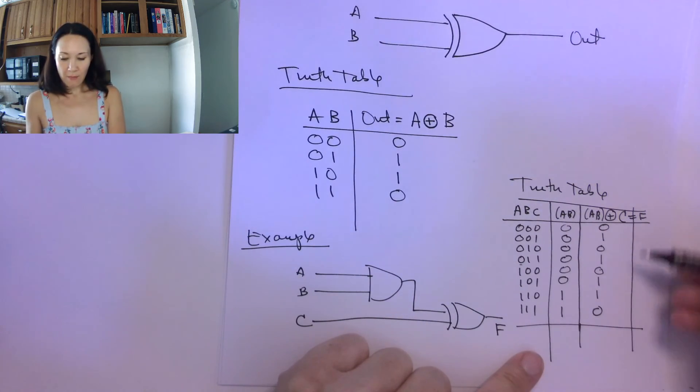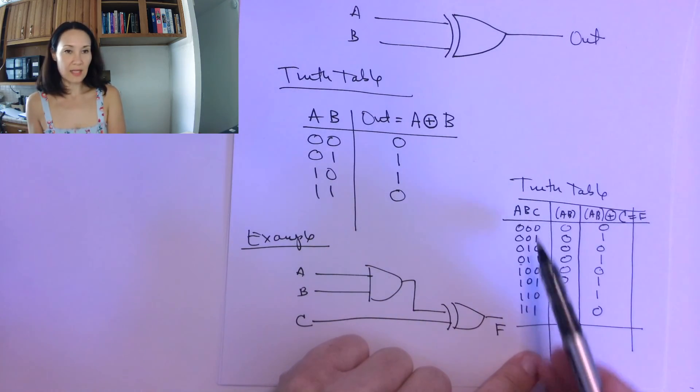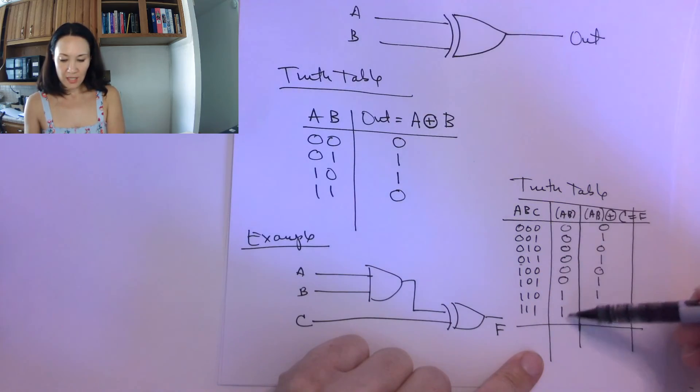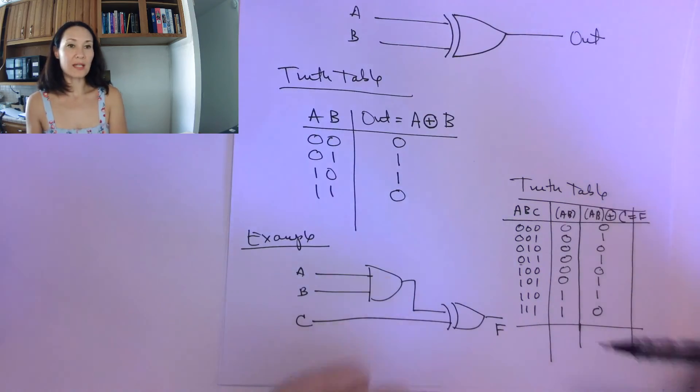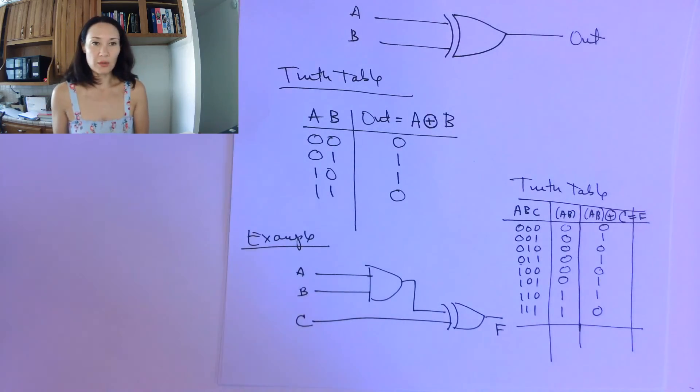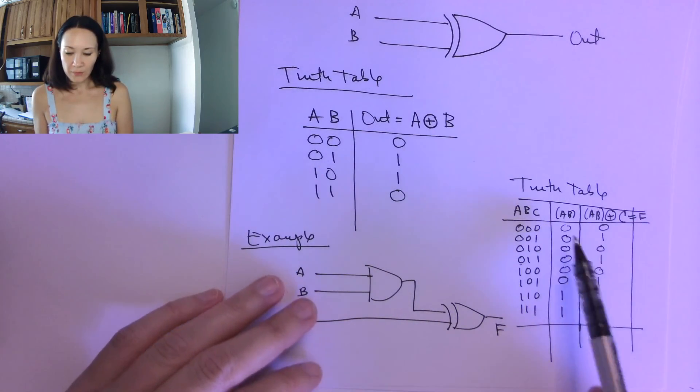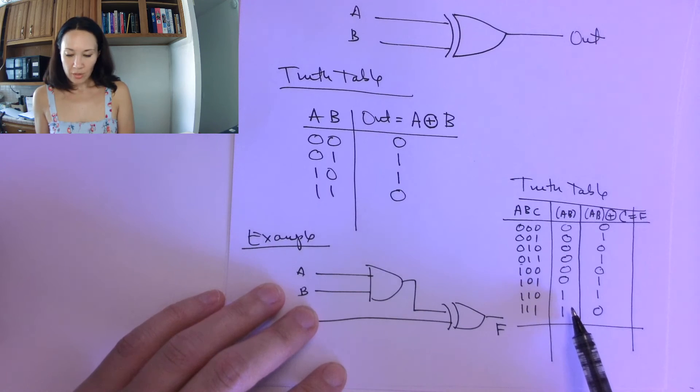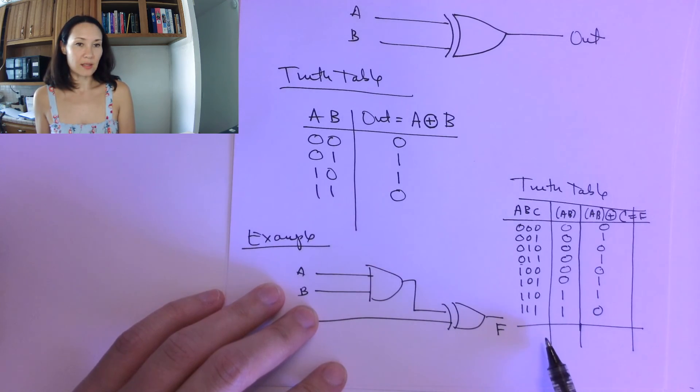So now my truth table, technically, it only has to have the inputs and the outputs. So this column here is just kind of extra that I like to have for me that I can refer to, and then it makes it easier for me to take the output of the AND and then XOR it with just the C.